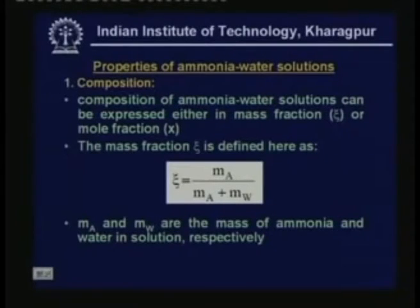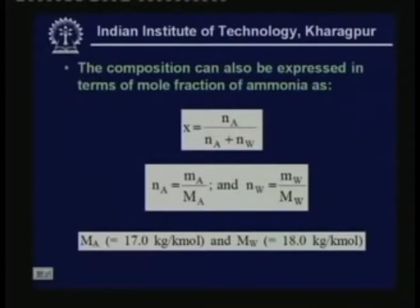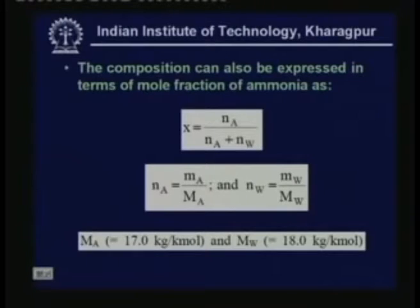The mass fraction ζ is defined as mass of ammonia M_A divided by the total mass of the solution, M_A plus M_W, where M_A and M_W are masses of ammonia and water respectively. Similarly, the liquid phase mole fraction X is defined as the number of moles of ammonia in the liquid phase divided by the total number of moles in the liquid phase. The number of moles of ammonia N_A equals mass of ammonia divided by molecular weight of ammonia, and for water similarly. For calculation purposes, take molecular weight of ammonia as 17 kg/kmol and molecular weight of water as 18 kg/kmol.